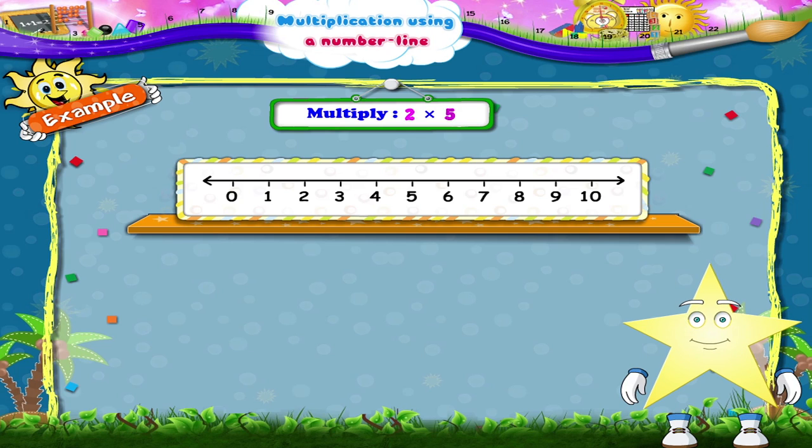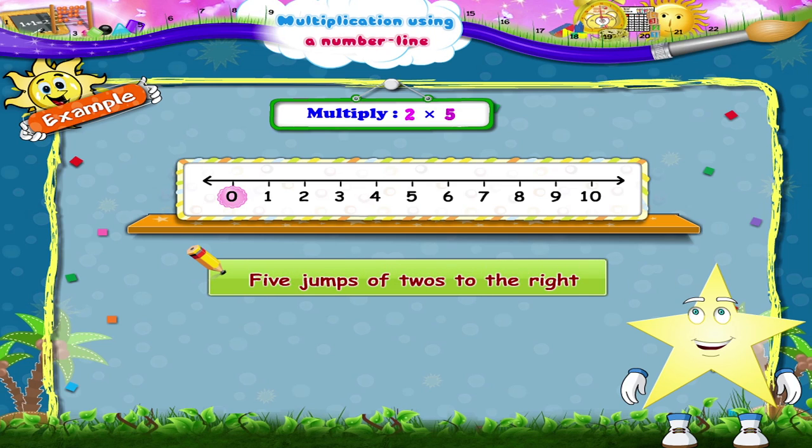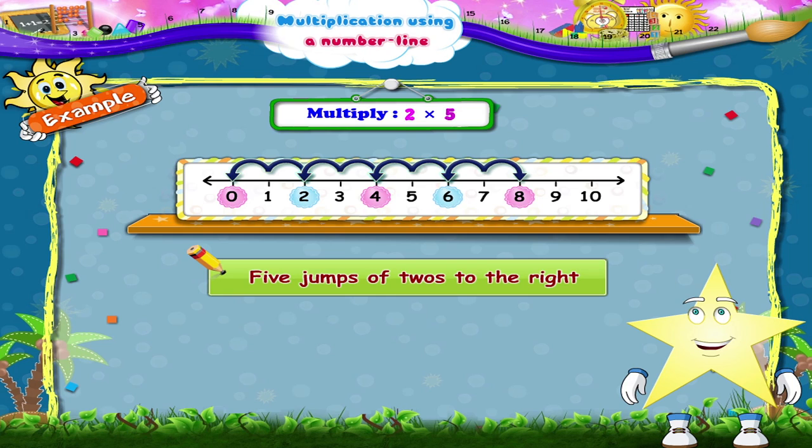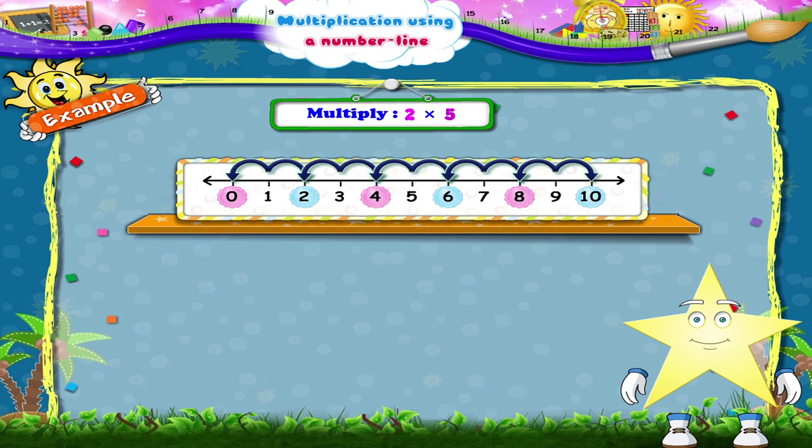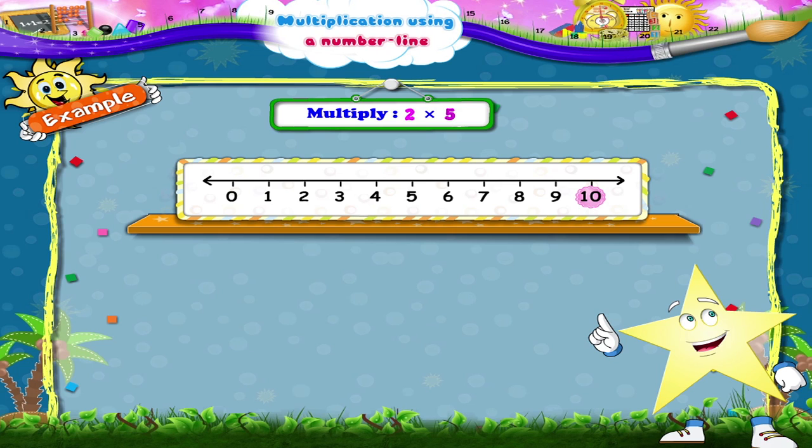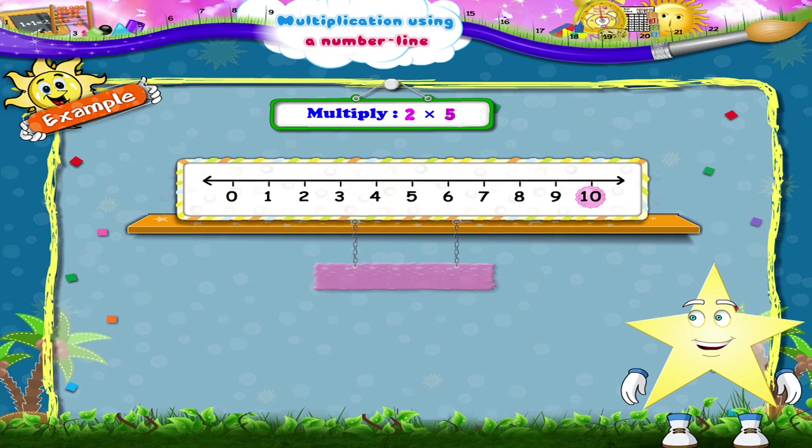Starry, now starting from zero you have to take five jumps of twos to the right. Yes, now jump from zero to two, two to four, four to six, six to eight, and eight to ten. We reach the number ten. So Starry, two multiplied by five is equal to ten.